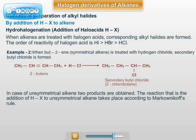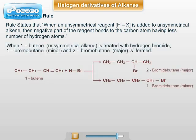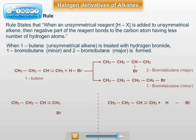In the case of an unsymmetrical alkene, two products are obtained. The addition of HX to an unsymmetrical alkene takes place according to Markovnikov's rule. Markovnikov's rule states that whenever an unsymmetrical reagent adds to an unsymmetrical alkene, the negative part of the reagent attaches to the carbon atom containing fewer hydrogen atoms. Therefore, but-1-ene reacts with HBr to give 2-bromobutane as the major product and 1-bromobutane as the minor product.